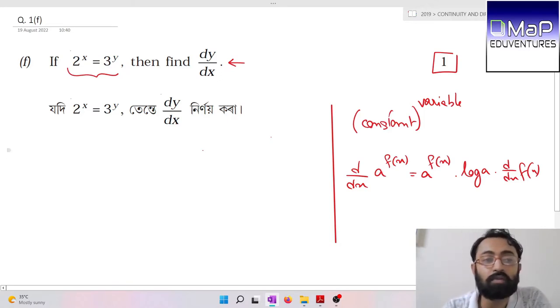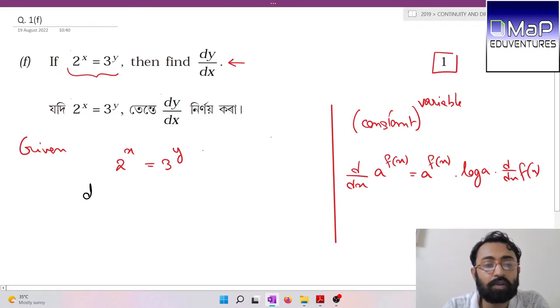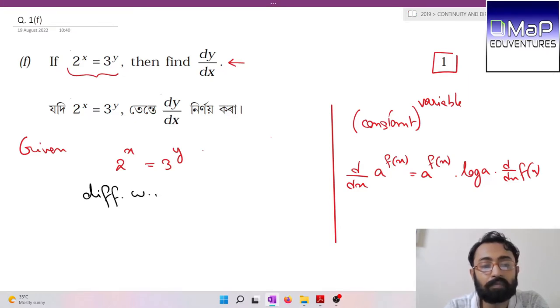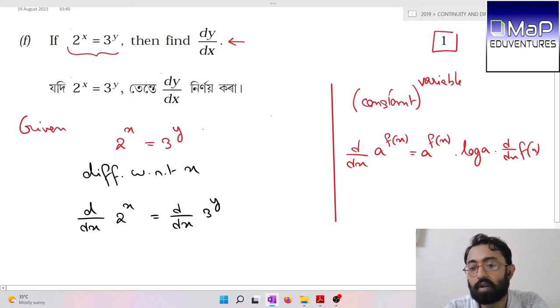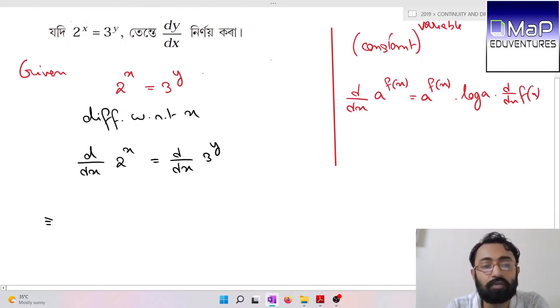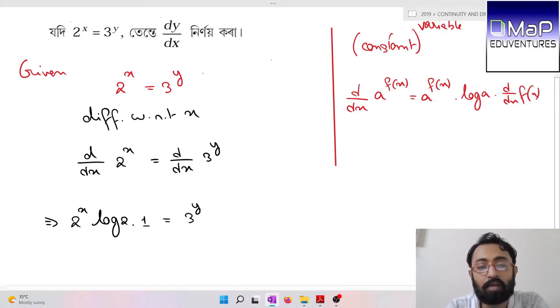So d/dx of 2 to the power x equals d/dx of 3 to the power y. Using the formula, d/dx of 2 to the power x gives 2^x log 2 times d/dx of x, which is 1. And d/dx of 3 to the power y gives 3^y log 3 times dy/dx.